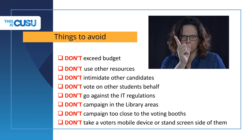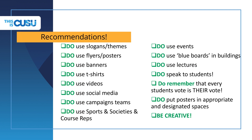Let's sum up with some quick do's and don'ts. Things to avoid: exceeding your budget — it's obvious when someone has overspent or not declared something and we will pass it on to the DRO. Do not intimidate other candidates — this election has to be as accessible and welcoming as possible for all involved. Voting on other students' behalf is a massive no-no — they must vote for themselves, and if they try to pass you their mobile device you must hand it back. Do not log on to friends' accounts to vote or breach any IT usage rules. The library is a no-campaigning area. And be sure not to campaign too close to the voting booths — the areas will be clearly marked by KUSU staff.